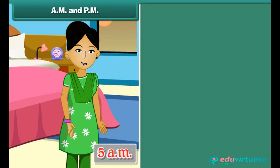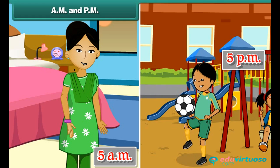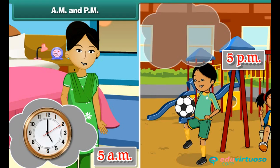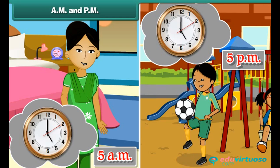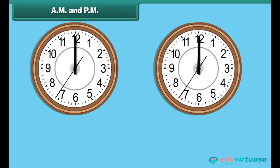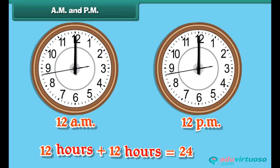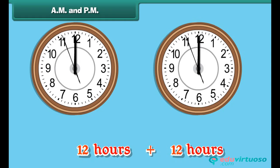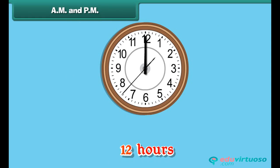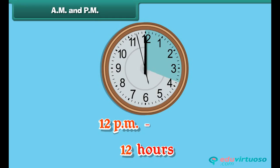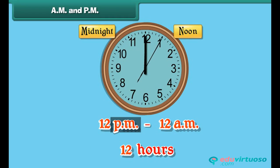A.M. and P.M. Your mother wakes up at 5 o'clock in the morning; you go out to play at 5 o'clock in the evening — the clock strikes 5 twice in a day, once in the morning and once in the evening. This is true of every hour from 1 to 12, because there are 24 hours in a day. The 24 hours are divided into two periods of 12 hours each. The first period, from 12 midnight to 12 noon, is denoted by A.M. The second period, from 12 noon to 12 midnight, is denoted by P.M.